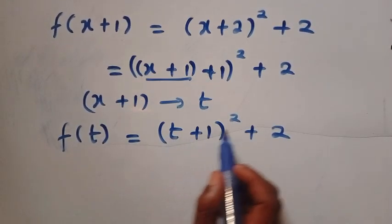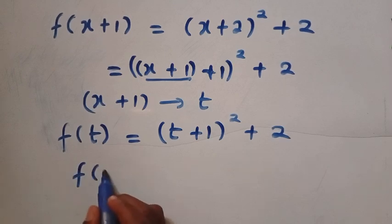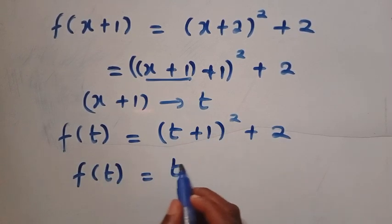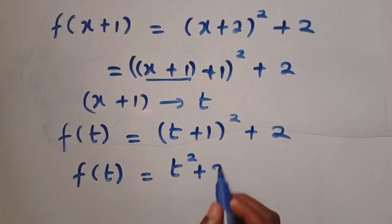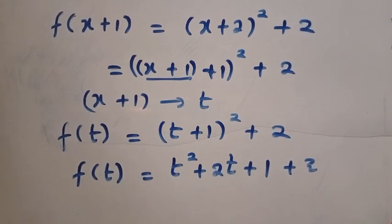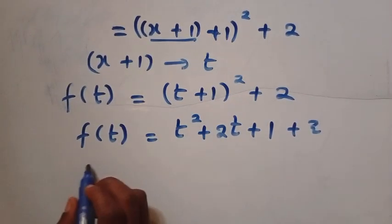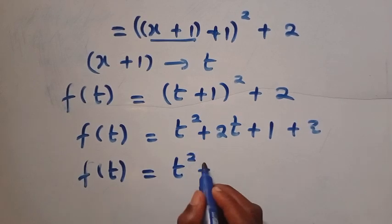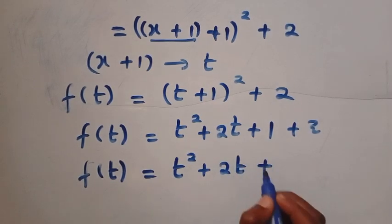Again, if I expand this, we have f of t equals t plus 1 squared, that gives us t squared plus 2t plus 1, then plus 2 outside the bracket. So here we have f of t equals t squared plus 2t plus 3.